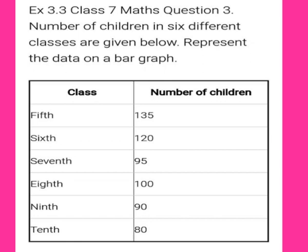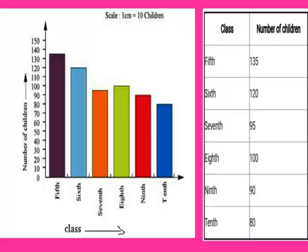Question number 3: the number of children in 6 different classes are given below. Represent the data on a bar graph, then answer the following questions. We are given a table with class in the first column and number of children in the second column.